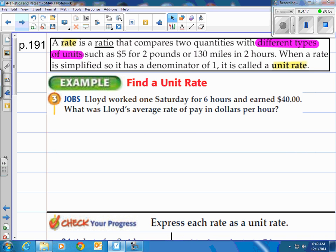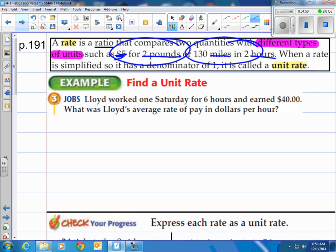Alright let's talk about rates. A rate is a ratio that compares two quantities with different types of units, such as cost five dollars for two pounds or 130 miles in two hours. Notice that there are two different units. So when a rate is simplified so it has a denominator of one, it is called a unit rate. Basically if you took the two numbers, five divided by two or 130 divided by two, you'd be getting the unit rate.